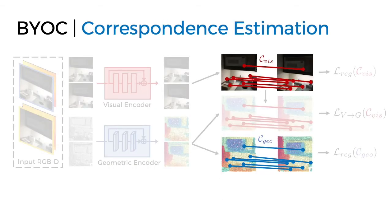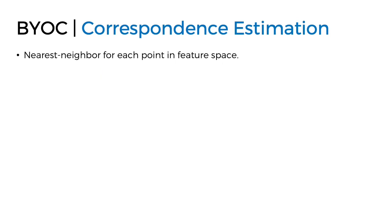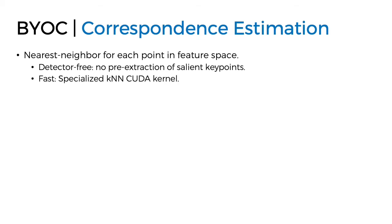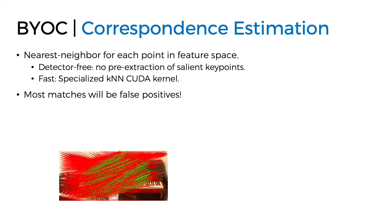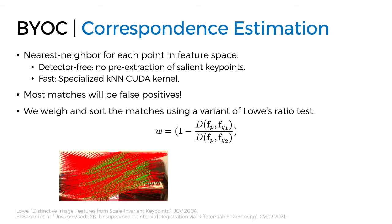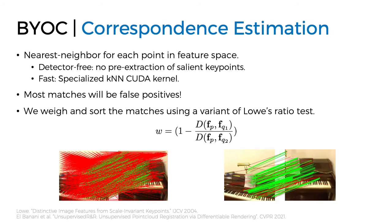We then extract correspondences for each modality separately. We first find the nearest neighbor for each point in feature space. We extract correspondences for all points, not just a subset of keypoints, making our method detector-free. We're able to do this quickly thanks to a specialized KNN CUDA kernel. However, most matches will be false positives. While recent approaches train separate networks to determine inliers, we use a much simpler approach: a variant of Lowe's ratio test. The weight is based on the ratio of feature similarity to the first and second nearest neighbors. We compute a weight for each correspondence and keep the top 400 correspondences as inliers. This is surprisingly effective at filtering correspondences.